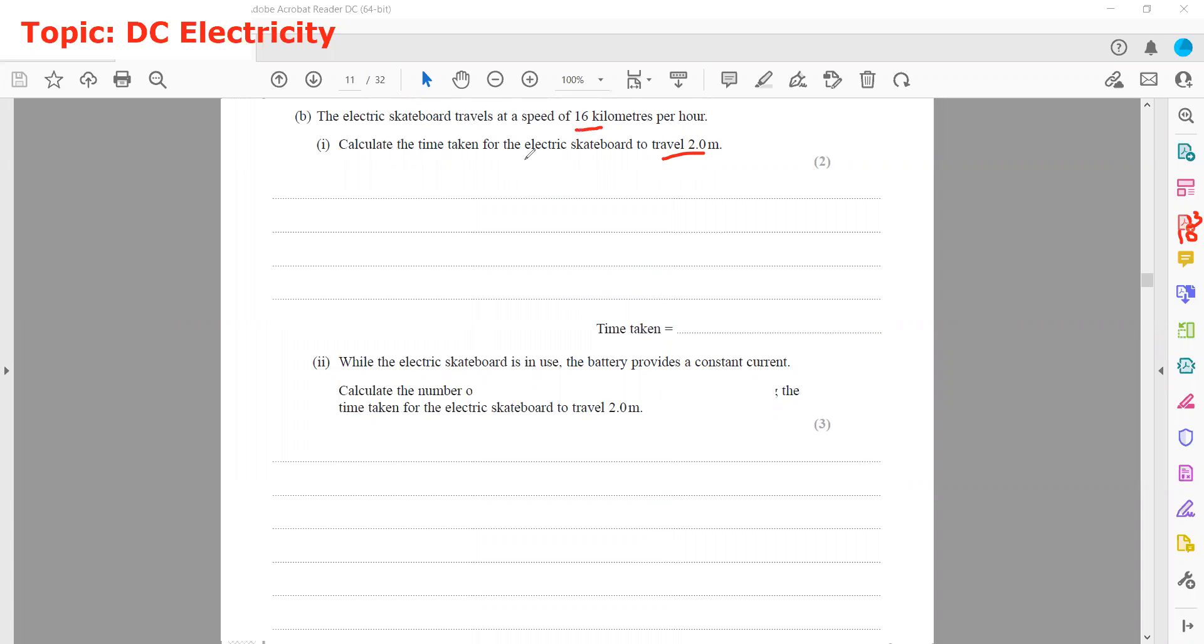So we can use the formula: speed equals distance divided by time. We assume that the speed is constant, not changing. Otherwise, if it was accelerating, we should use equations of motion. So speed is distance over time, therefore time equals distance divided by speed.